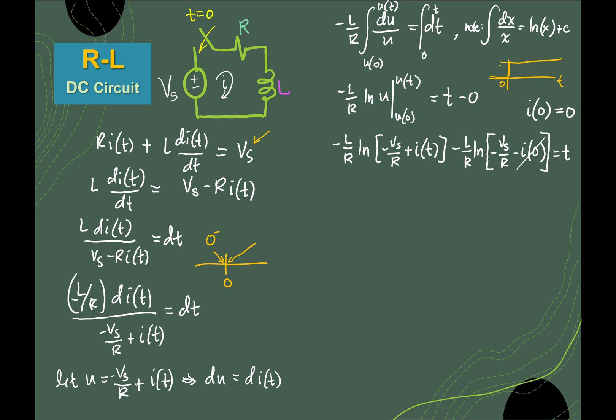There is also a point after zero that is very close to zero — we call that 0 plus. On one side we have something like negative 0.000000001, and on the other side positive 0.0000001. So those very small values represent 0 minus and 0 plus.